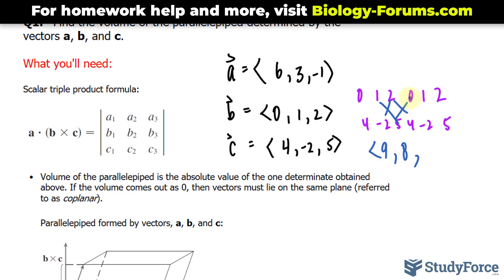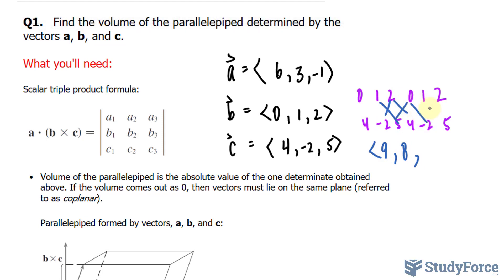And lastly, 0 times negative 2, that's 0, minus 1 times 4 is negative 4. So we found the cross product, b times c.